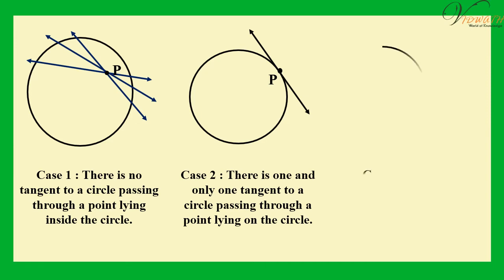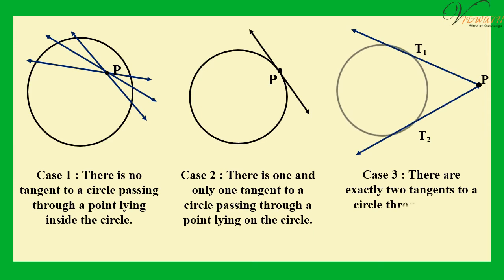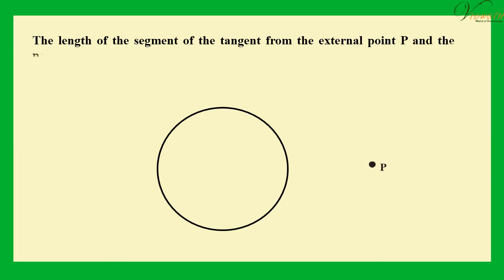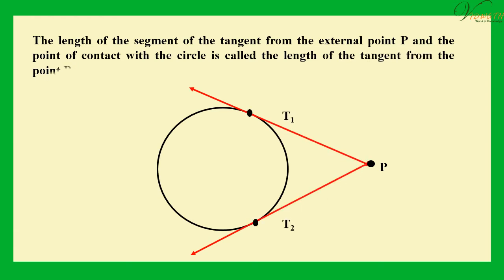Case 3: The length of the segment of the tangent from the external point P and the point of contact with the circle is called the length of the tangent from the point P to the circle.